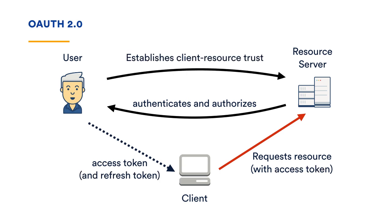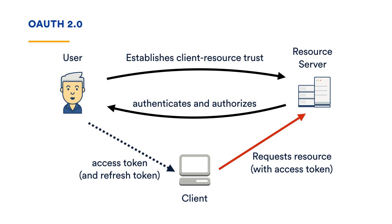Then we get to OAuth, which is like the full whiz-bang solution. It has explicit support for client-resource trust establishment and also more sophisticated tokens — access and refresh tokens, which we'll get to in a minute. So let's jump into some of the details you need about OAuth. OAuth is a really big standard, but hopefully we'll narrow it down to the minimum you need to know.